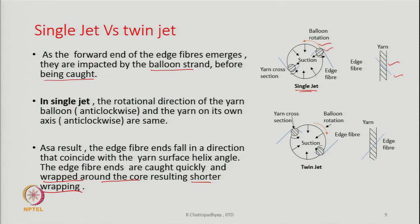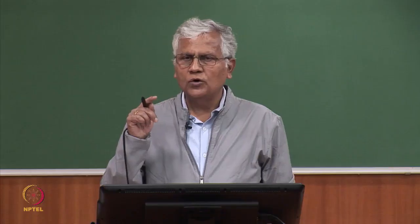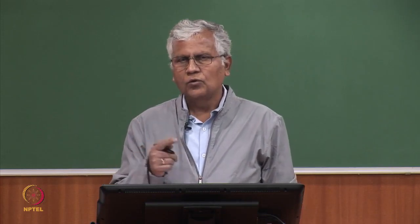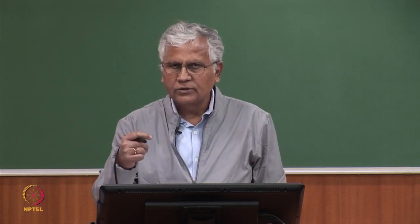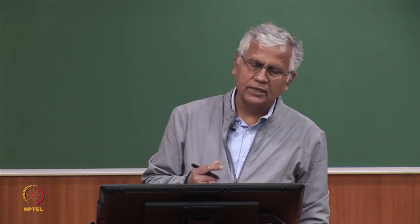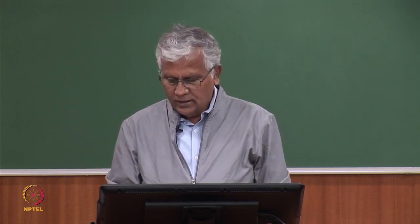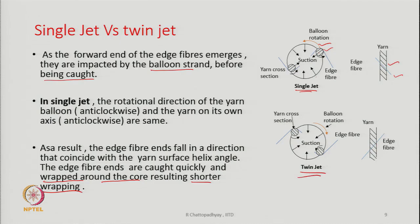The implication is that the wrapping twist acts over a shorter length of the yarn, making the yarn weaker. For a given edge fiber, the leading part forms the wrap around the core while the rest may form the core. With a single jet, the wrapping part will be shorter and therefore the yarn will be weaker.